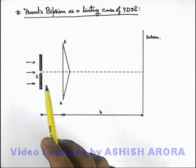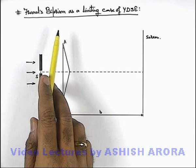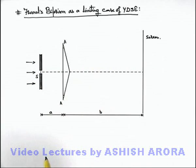Let us now study the concept of Fresnel's biprism used as a limiting case of Young's double slit experiment.